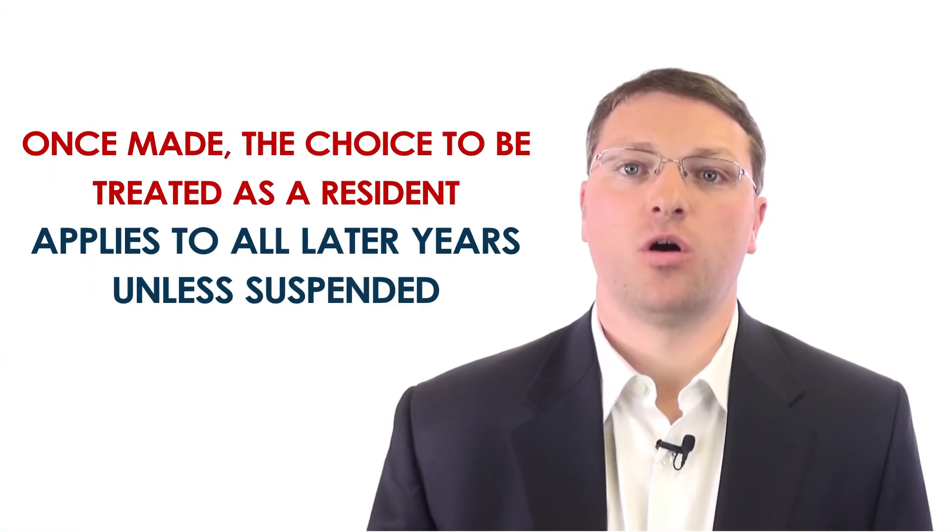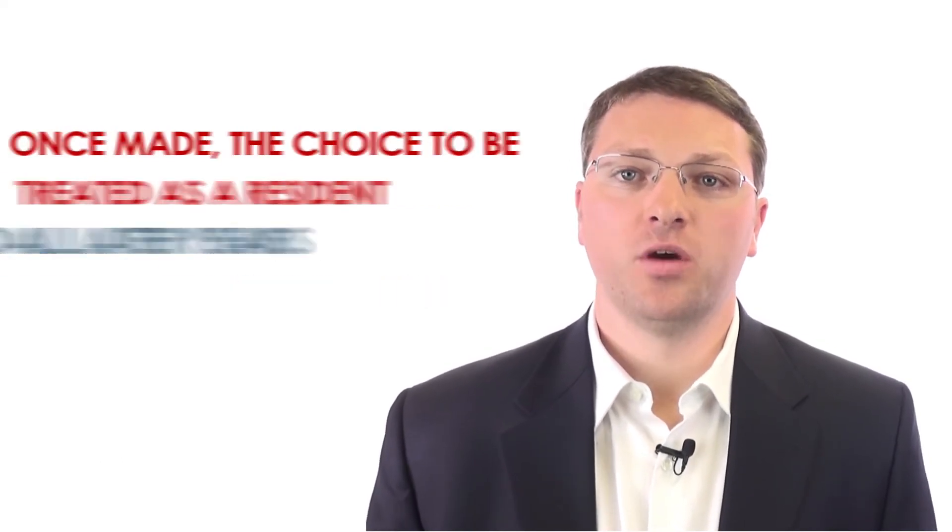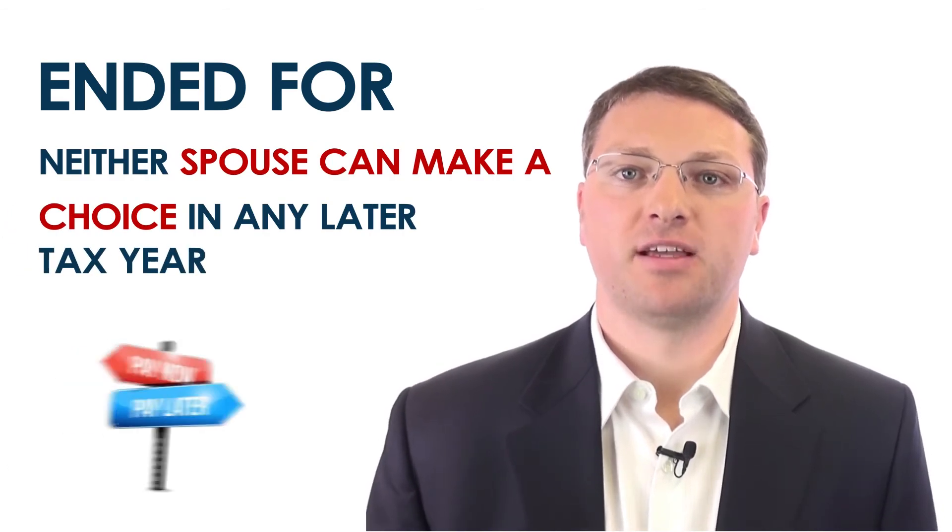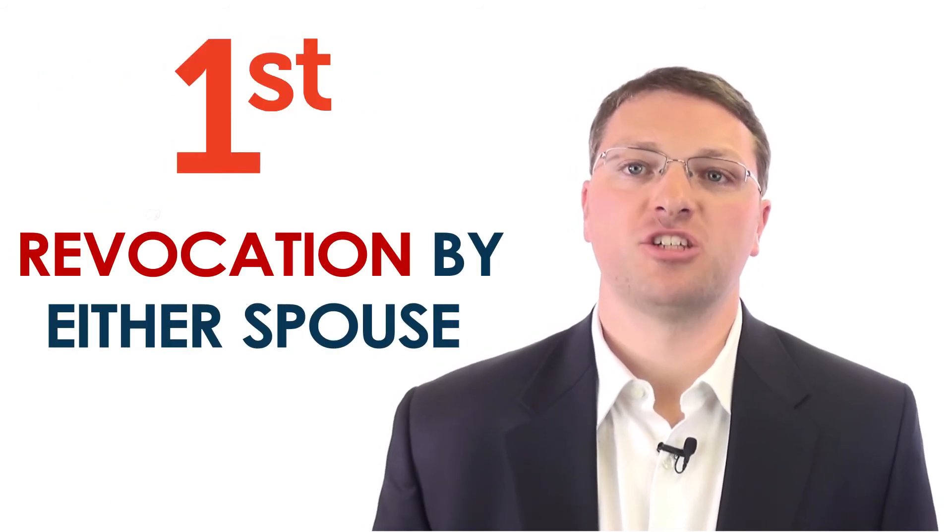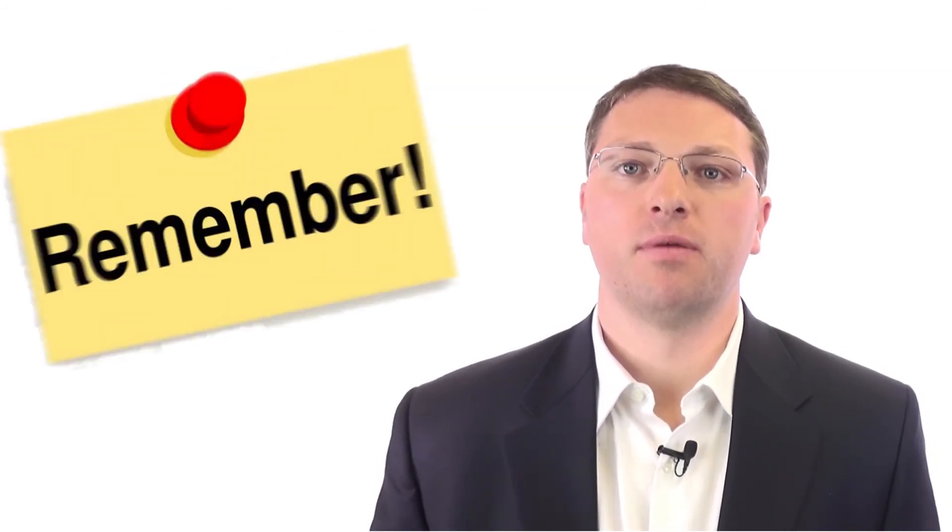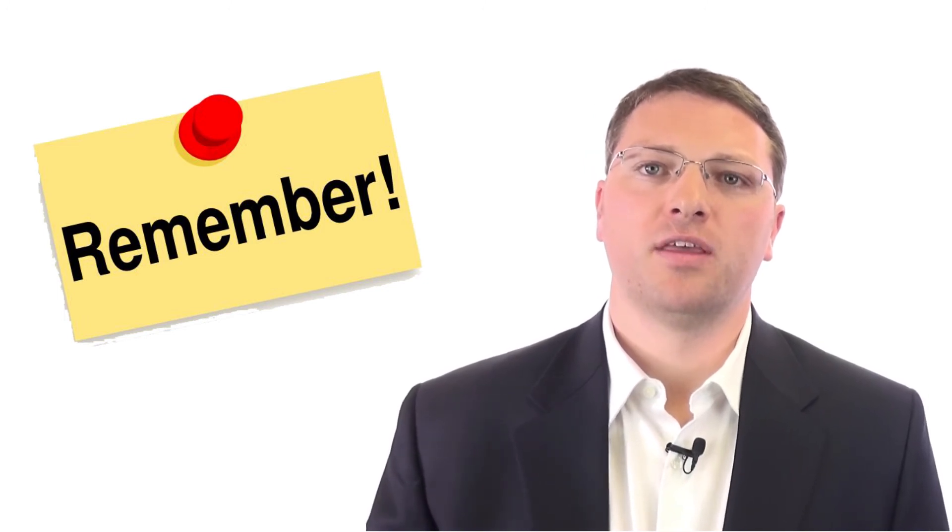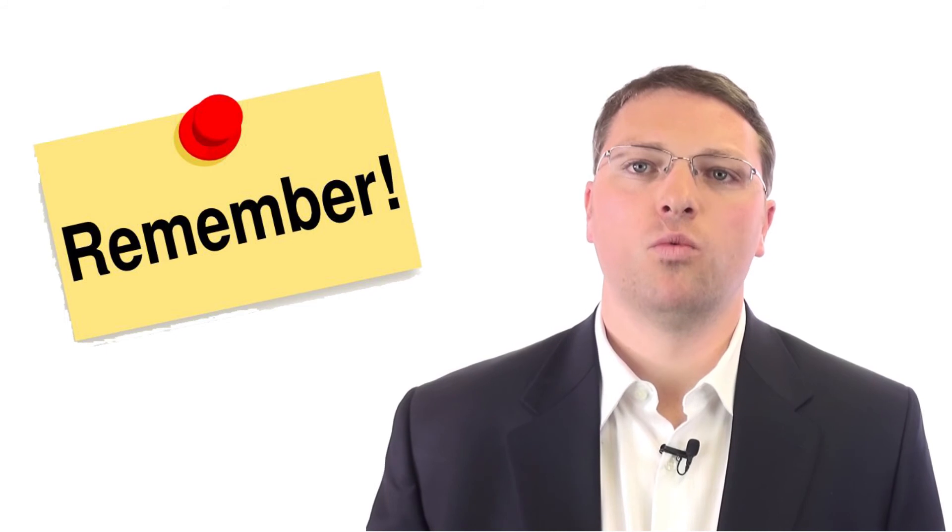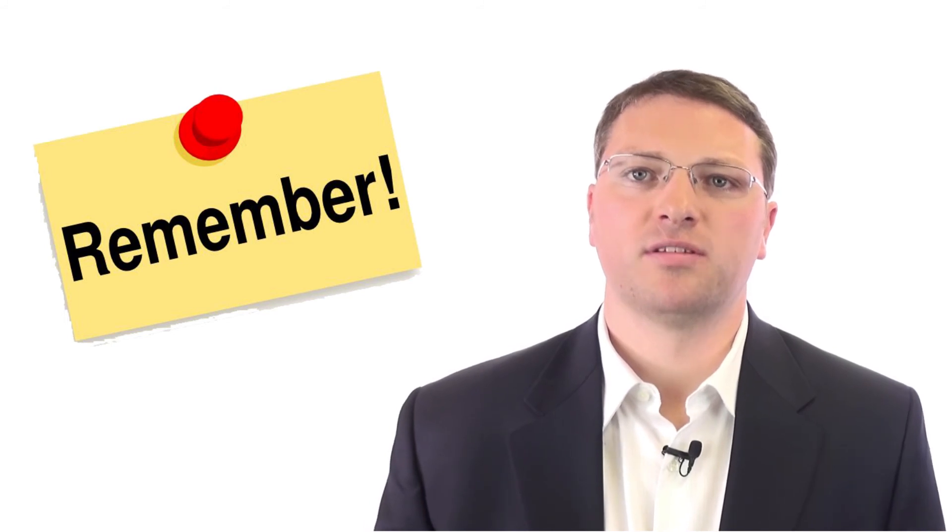Okay, let's talk about ending the choice. Once made, the choice to be treated as a resident applies to all later years unless suspended or ended in one of the following ways. If the choice is ended for any of these reasons, neither spouse can make a choice in any later tax year. That's why it's a once-in-a-lifetime decision. The first way is revocation by either spouse, death of either spouse, legal separation, or inadequate records. Remember, this is a once-in-a-lifetime decision, so take it seriously. Consult a tax professional before making this decision. Find out what the benefits and what the consequences are of the decision. It can only be made once-in-a-lifetime, and even if you get remarried, it's only something that you can make once-in-a-lifetime.